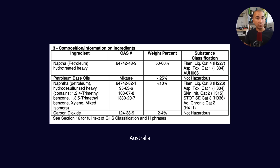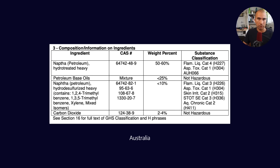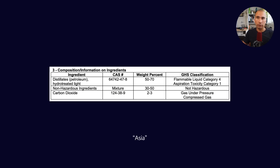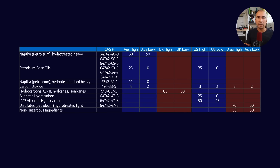If you look at some of the safety data sheets — here's one for Australia where it details naphtha, that is to say petroleum or hydro-treated petroleum, as well as some petroleum base oils. Then you've got the same thing from the UK, which has an associated CAS number identifying hydrocarbons anywhere between C9 and C11. Then you've got the one from the US — aliphatic hydrocarbons, petroleum base oils. And then one from Asia: distillates, petroleum distillates, and non-hazardous ingredients. If you summarize all of these in a table, given the low and high ranges from the SDSs, you can start to build up a picture for what the majority of WD-40 is.